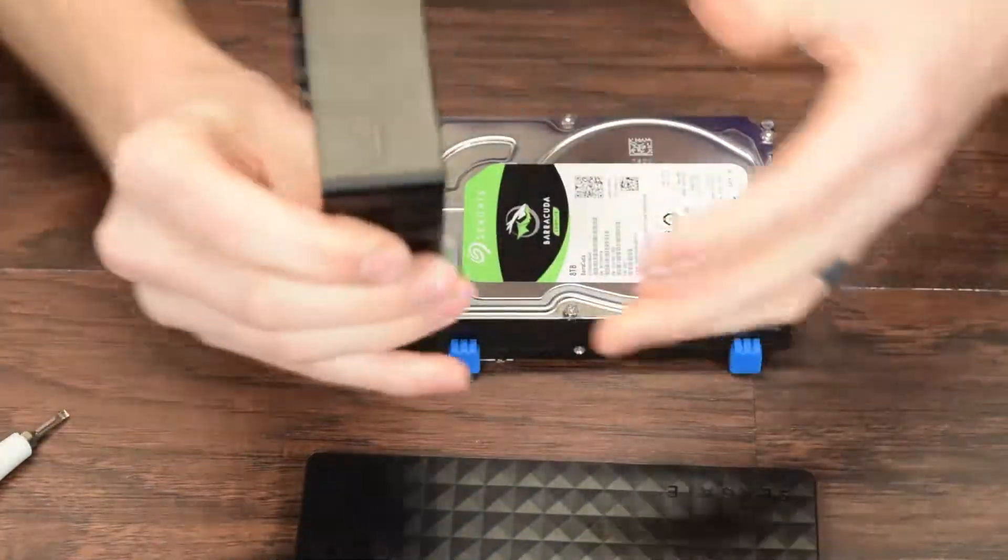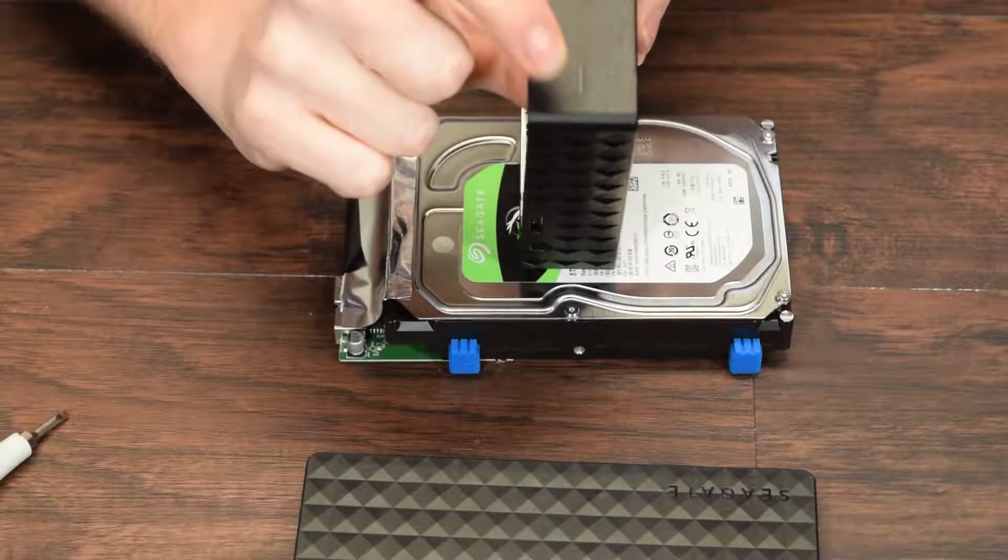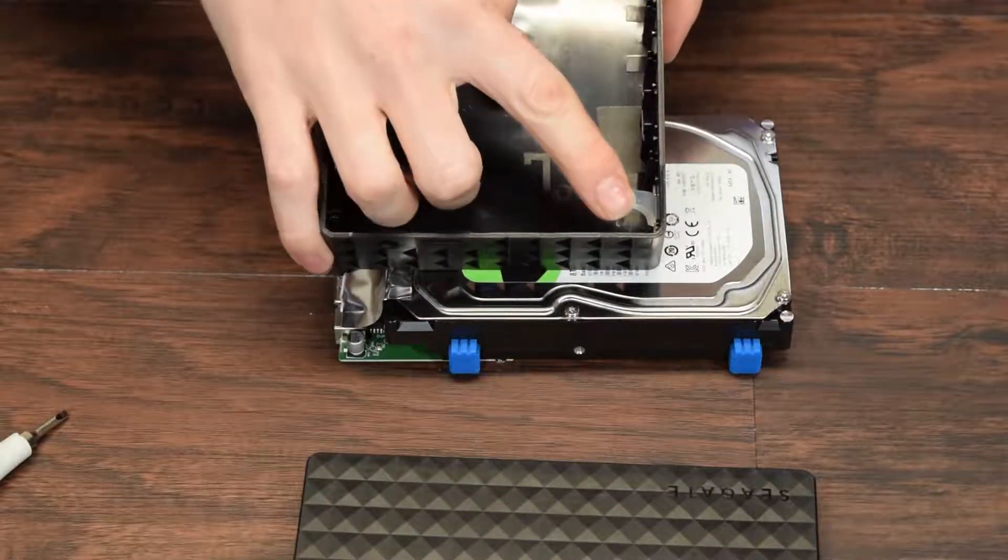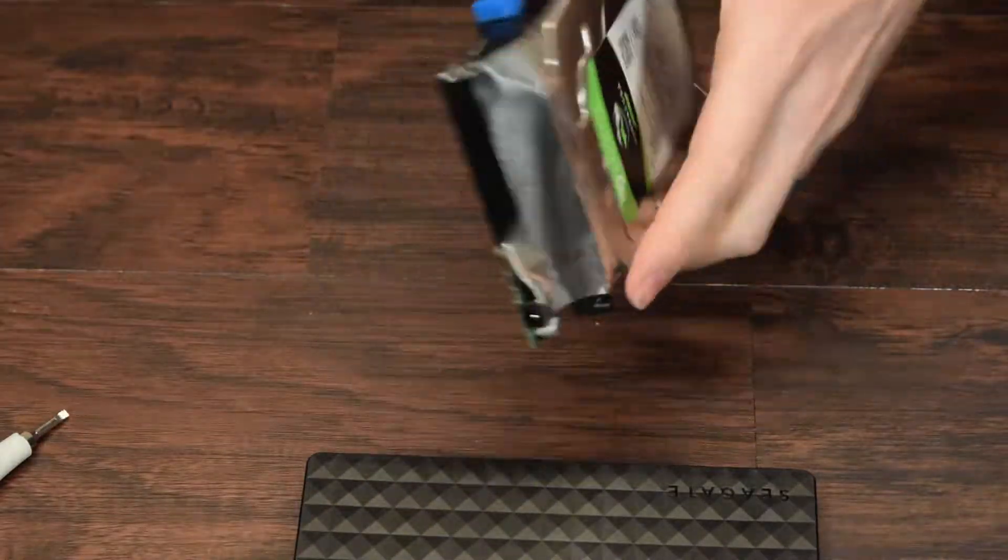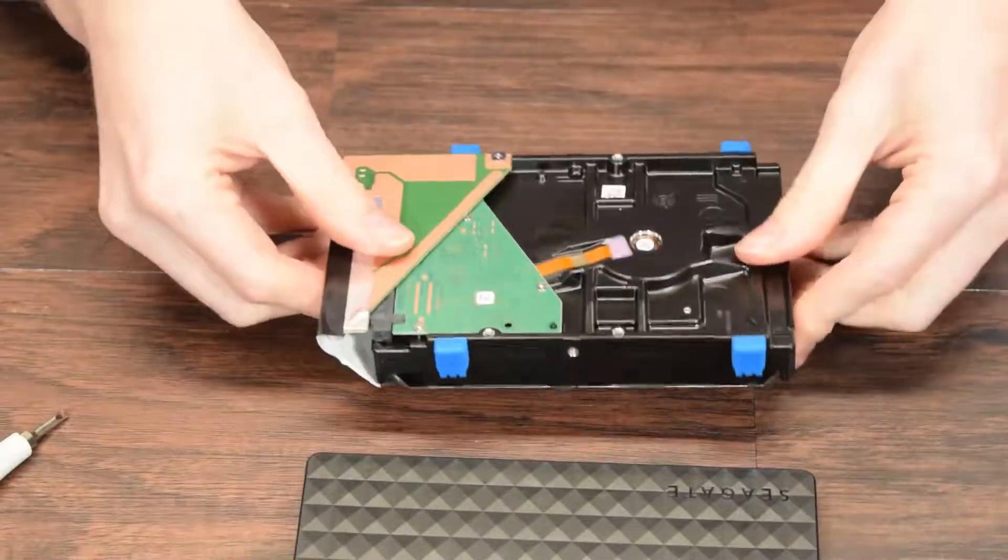You can see where this hard drive access light is. There's actually just a little plastic thing and an LED on the board. Let's take a look at what we got here.